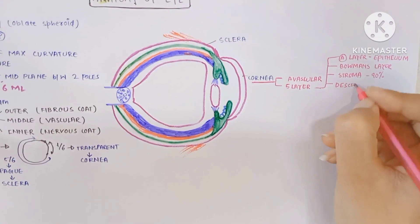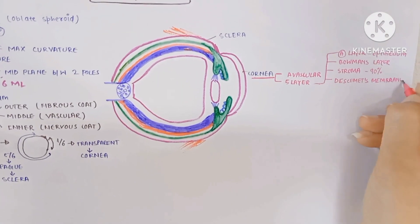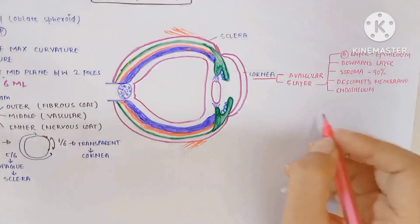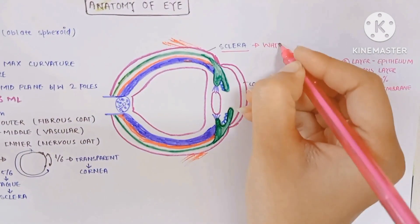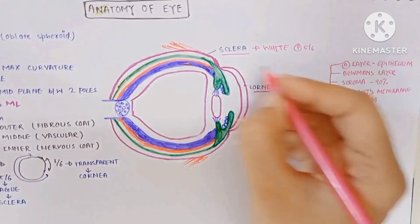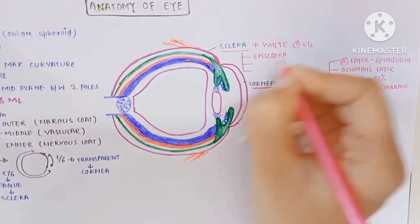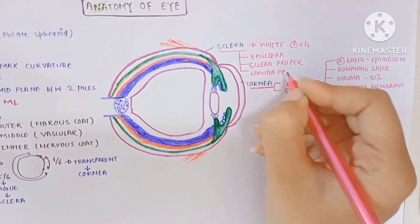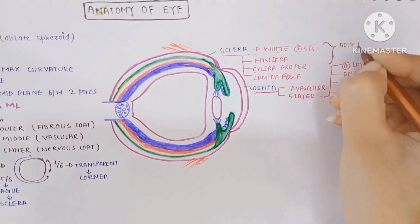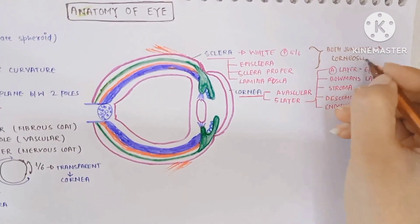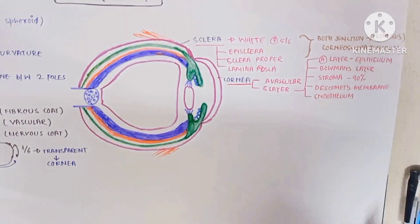Now sclera. Sclera is the white posterior five-sixths part. It has episclera, sclera proper, and lamina fusca. The junction of both layers is the corneoscleral junction which is named the limbus.